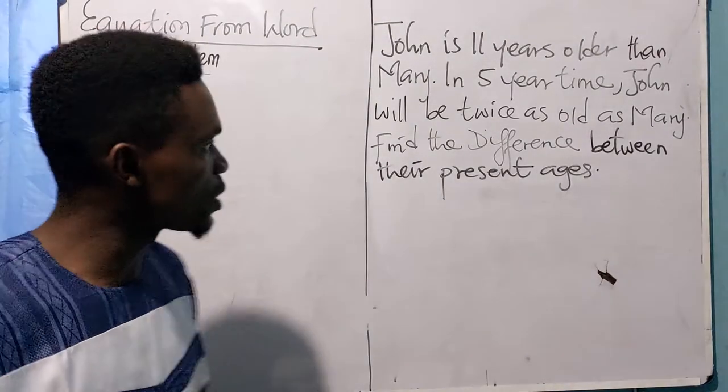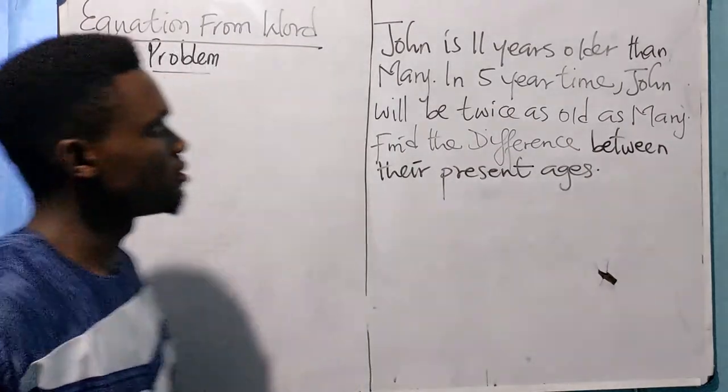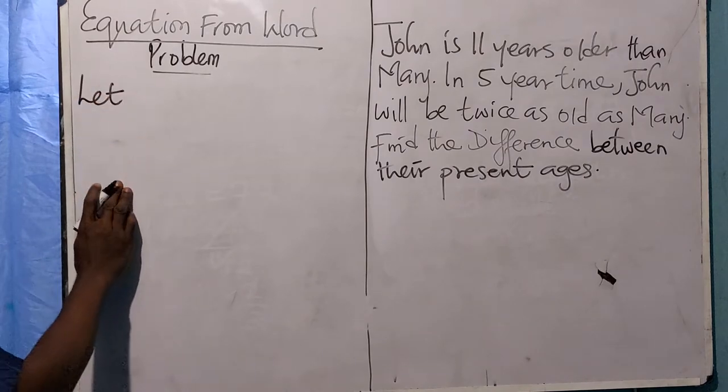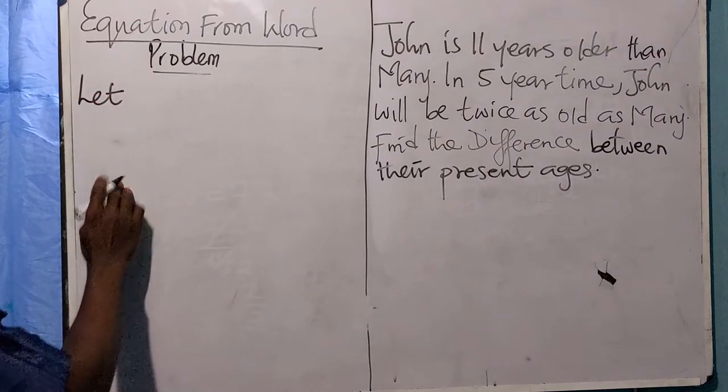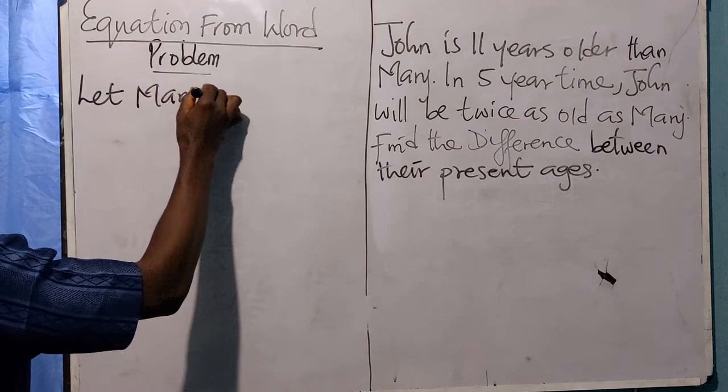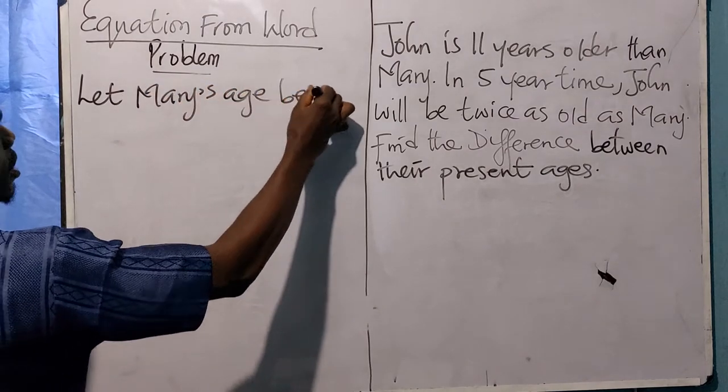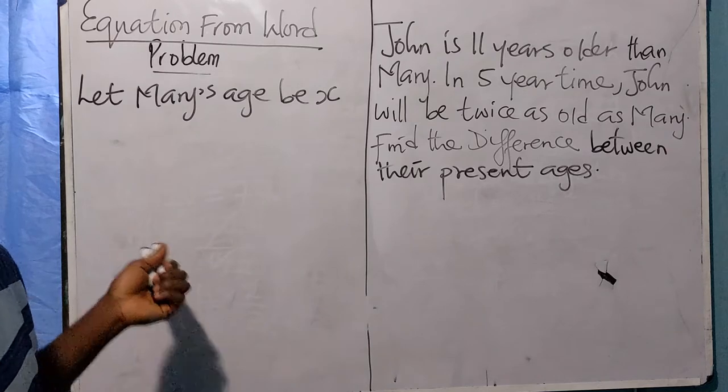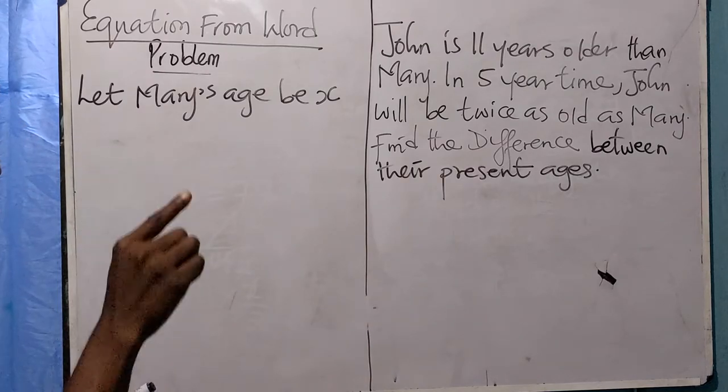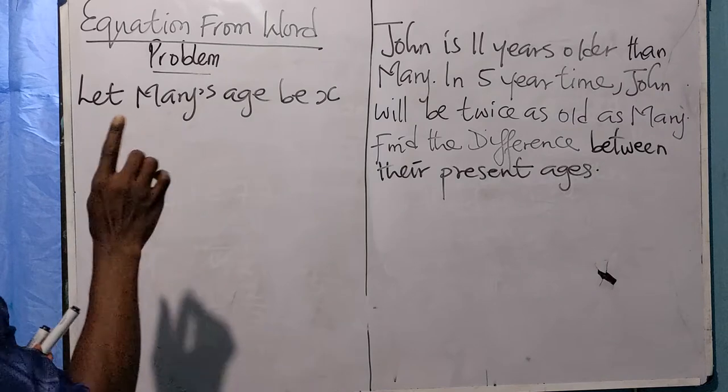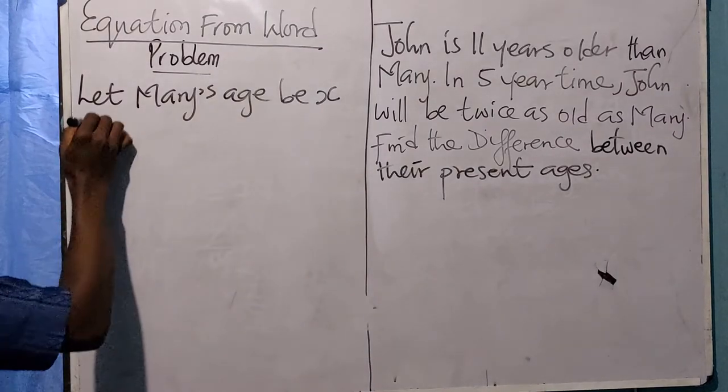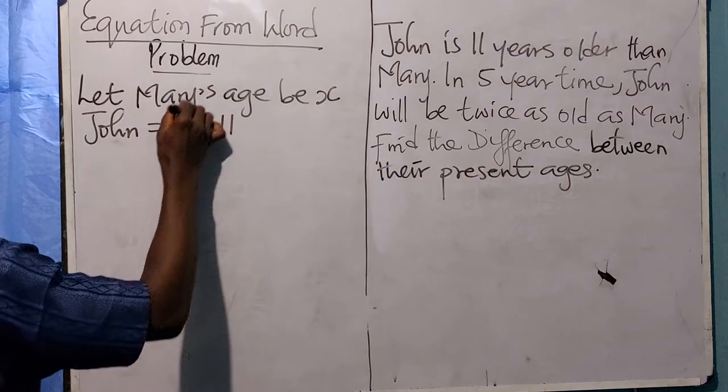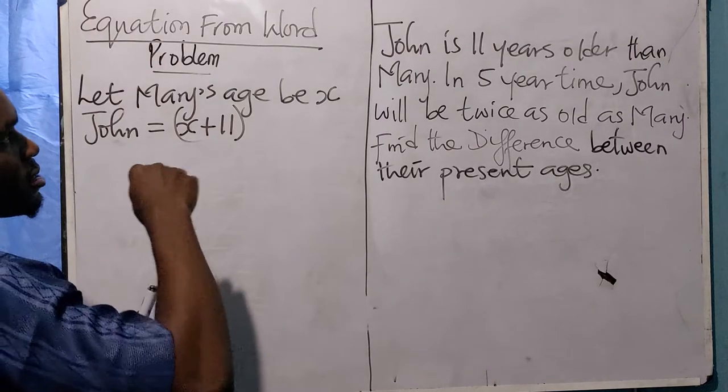Let's let Mary's age be x. We do not know what Mary's age is, so we can denote it using any letter. Now, John is 11 years older than Mary. If Mary is x years old, it means that John would be x plus 11 years old.